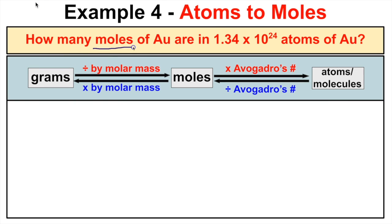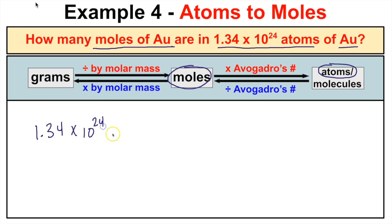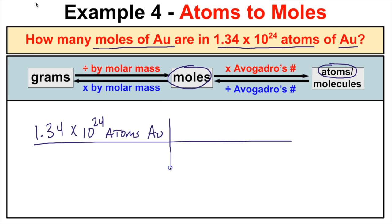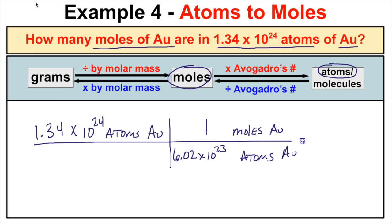This example says: how many moles of gold are in 1.34 × 10²⁴ atoms of gold? The starting quantity is in atoms and we want to find moles. We set up 1.34 × 10²⁴ atoms of gold. We don't need molar mass — only Avogadro's number. We put atoms of gold at the bottom to cancel and moles of gold at the top. We know that one mole of gold equals 6.02 × 10²³ atoms of gold.